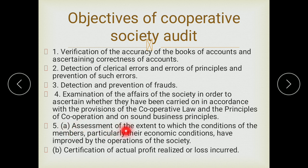The fifth objective is assessment of the extent to which the condition of the members, particularly the economic condition, has improved through the operation of the society. The cooperative society should help and provide services to members, and the audit checks whether members' economic conditions have specifically improved. Lastly, the sixth objective is clarification of actual profit realized or loss incurred — the audit certifies whether there is an actual profit or loss.